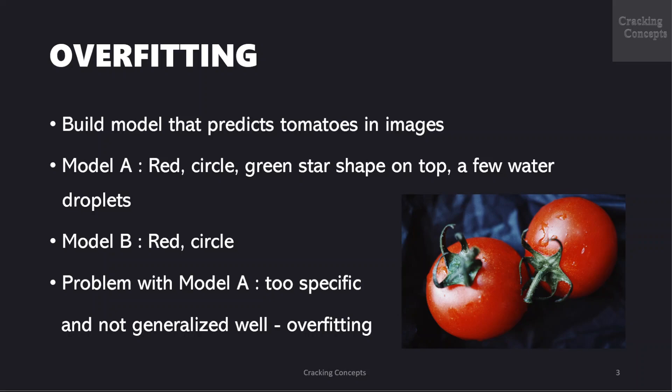The problem with model A is that not all tomatoes have water droplets on them. The model is too specific and likely to pick wet tomatoes. It is not generalized well to pick all tomatoes. It will look for water droplets so it cannot predict dry tomatoes in an image. This is overfitting.